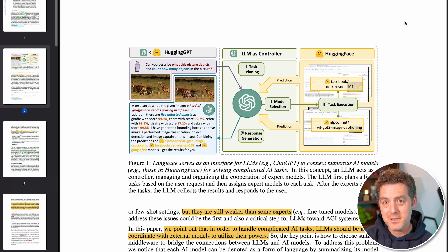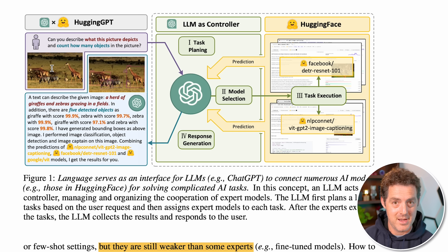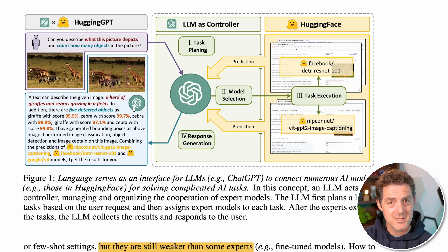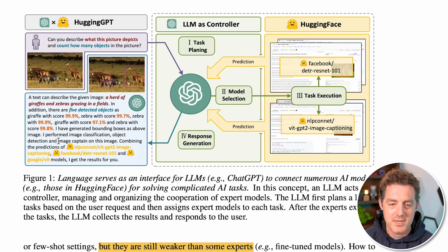Let's look at this graphic here because it really speaks to what is possible with HuggingGPT. In this image, they're given the prompt: 'Can you describe what this picture depicts and count how many objects are in the picture?' It needs to do a lot of different analyses on this picture. Here it says a text can describe the given image: 'A herd of giraffes and zebras grazing in fields.' First it has to understand the image contents. Next it says there are five detected objects — giraffe, zebra, zebra, giraffe, and zebra — and it has generated bounding boxes in the above image. With this, it's done image classification, object detection, and image captioning, combining three different libraries into one response.